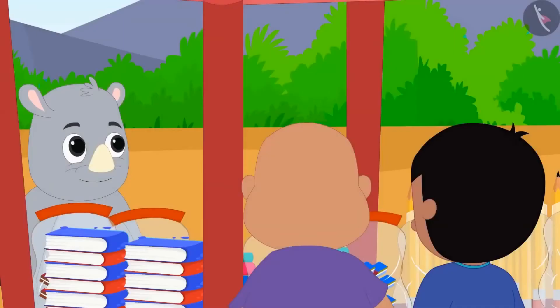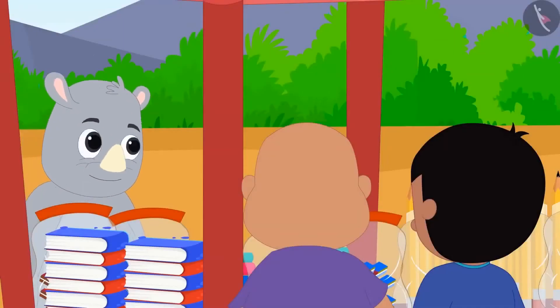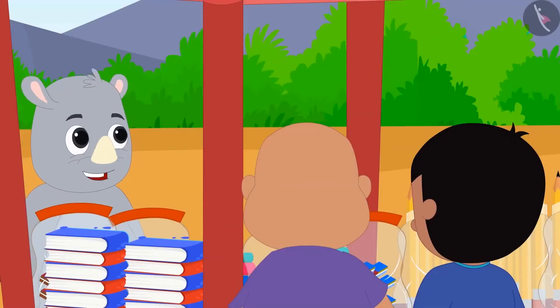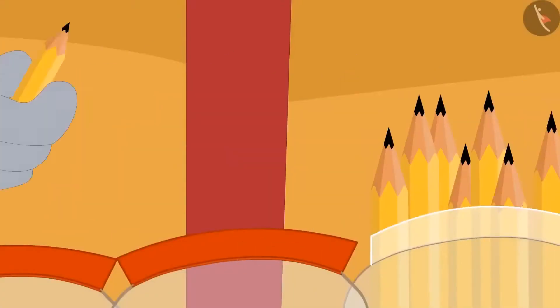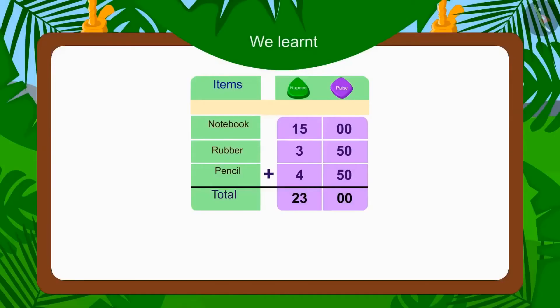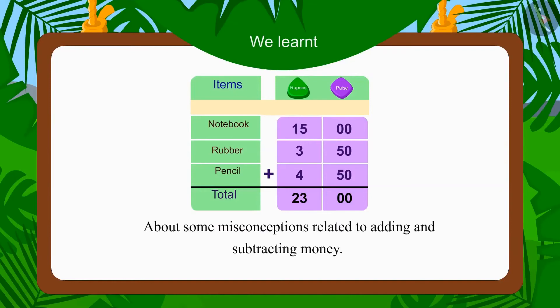Gaggu was happy to see the honesty of those children and gave them one pencil each for free. In this video, we saw some common mistakes related to adding and subtracting money.